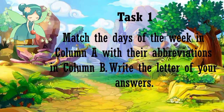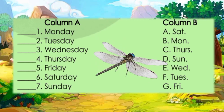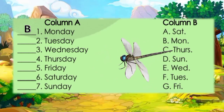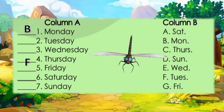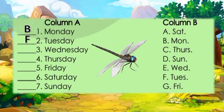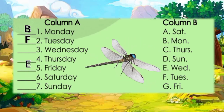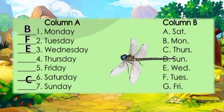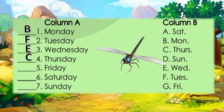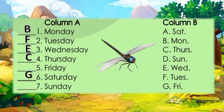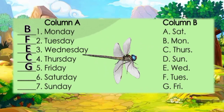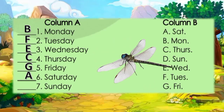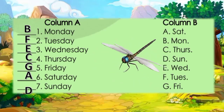Write the letter of your answers. Number 1, Monday — Letter B, MON. Number 2, Tuesday — Letter F, TUES. Number 3, Wednesday — Letter E, WED. Number 4, Thursday — Letter C, THURS. Number 5, Friday — Letter G, FRI. Number 6, Saturday — Letter A, SAT. And number 7 is Sunday — Letter D, SUN.